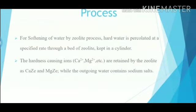Now, the process of zeolite. For softening of water by zeolite process, hard water is percolated at a specific rate through a bed of zeolite kept in a cylinder. The hardness-causing ions are retained by the zeolite as calcium zeolite and magnesium zeolite, while the outgoing water contains sodium salts.